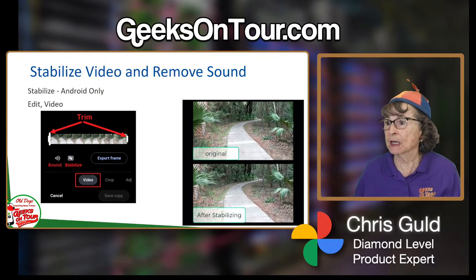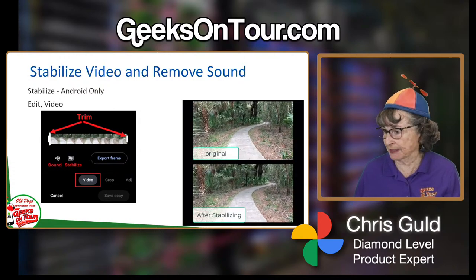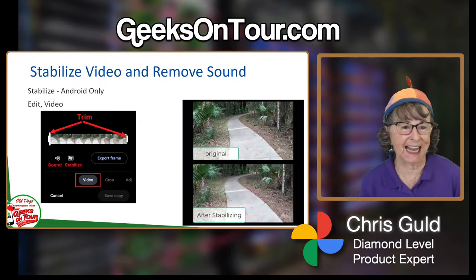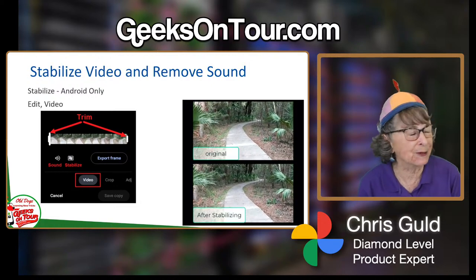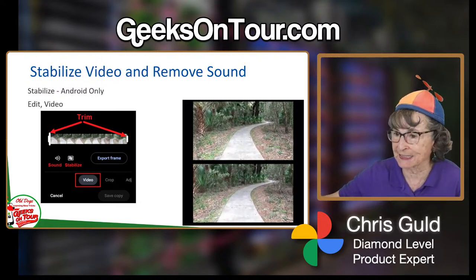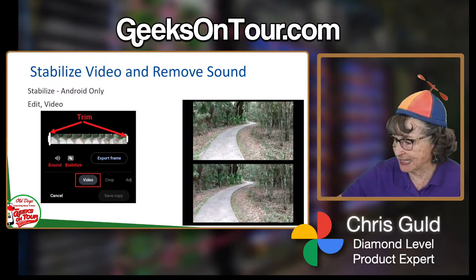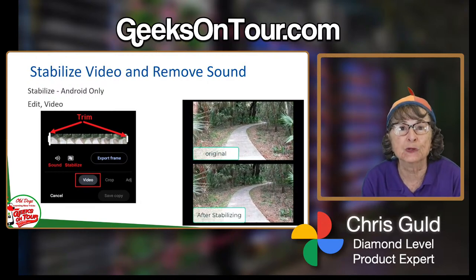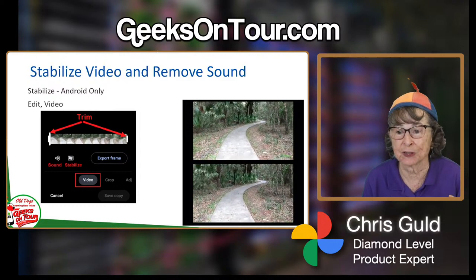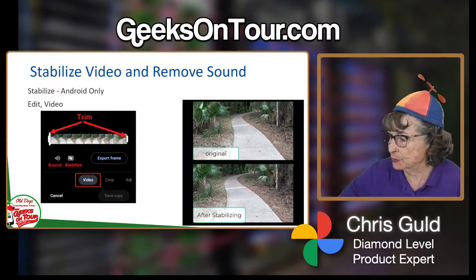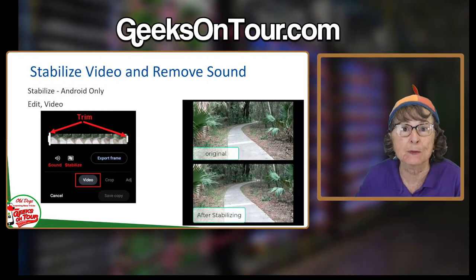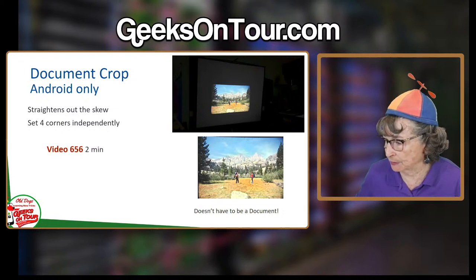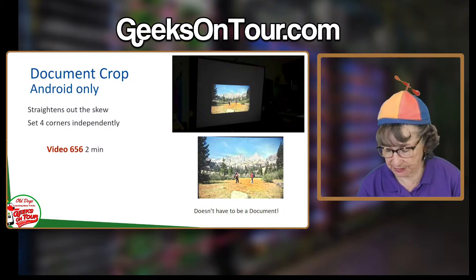Stabilize is the best video editing feature. If you have a really jerky video, you just tap the Stabilize button and it smooths it out — it's really, really good. You can also remove sound from a video if you want.